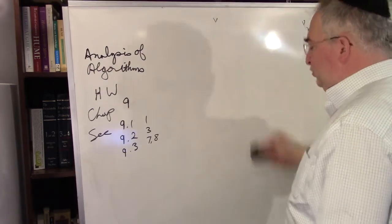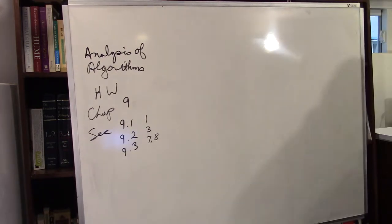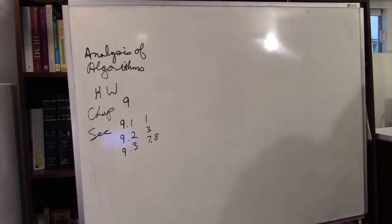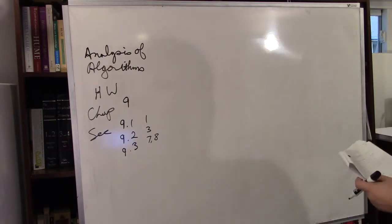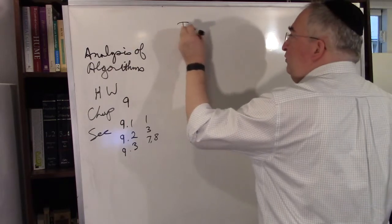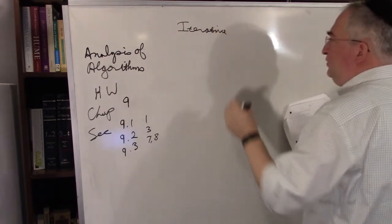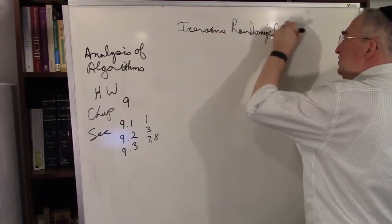Let's do number 9.2 number 3: write an iterative version of randomized select. Iterative means not recursive. So, iterative randomized select.